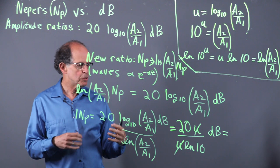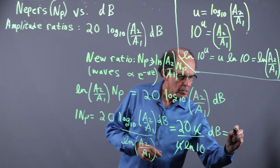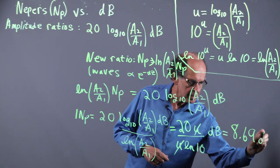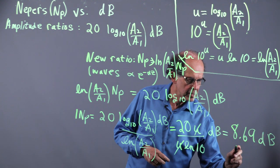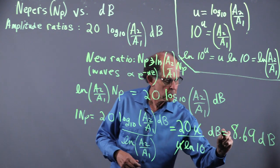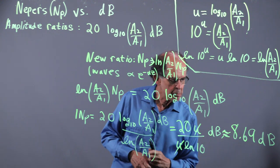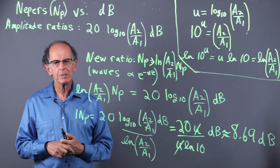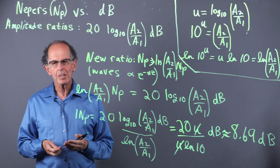And so this works out to 8.69 dB. And that's to two figures. It's something bigger, but we'll say approximately equal. So one Dnepr, in terms of practical common usage, is 8.69 dB. They're both unitless.